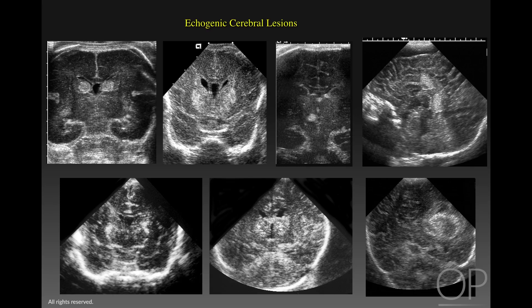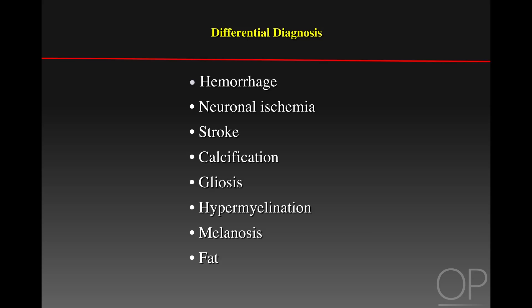These seven infants, each of whom have a focal echogenic lesion, look quite similar. However, each of them has a different diagnosis that we will summarize at the end of the talk. The differential diagnosis of these lesions includes, in addition to hemorrhage: